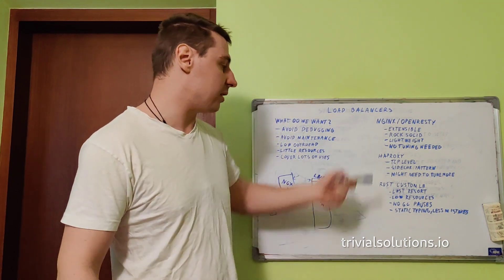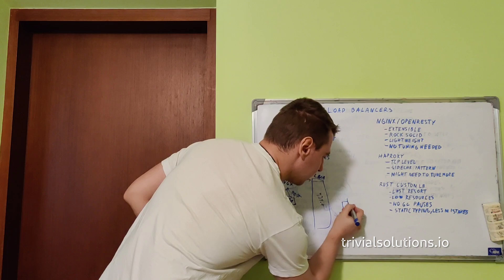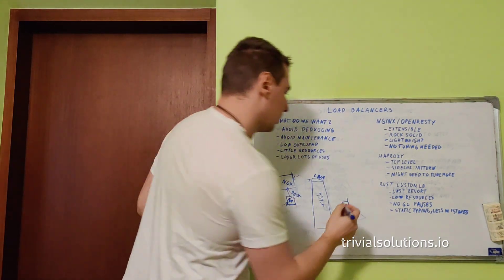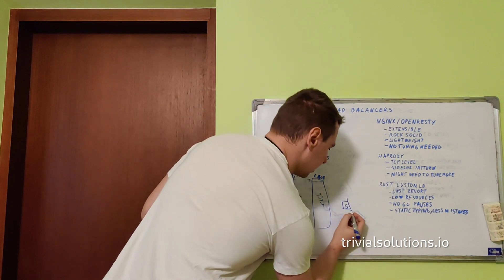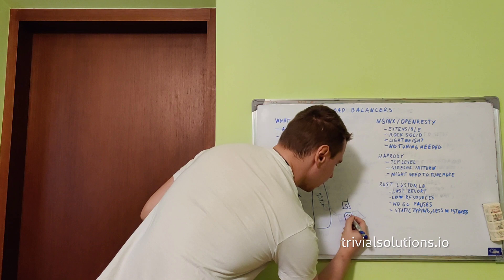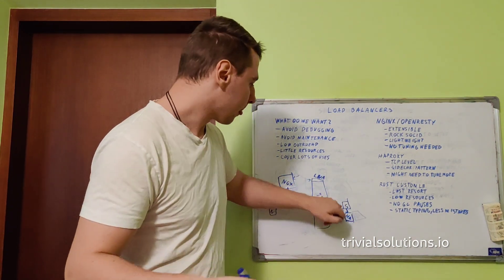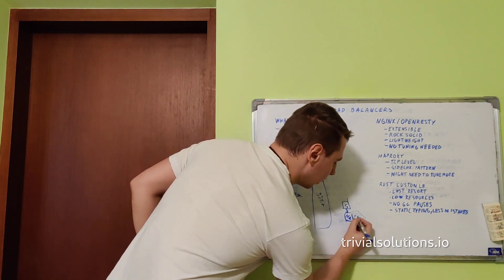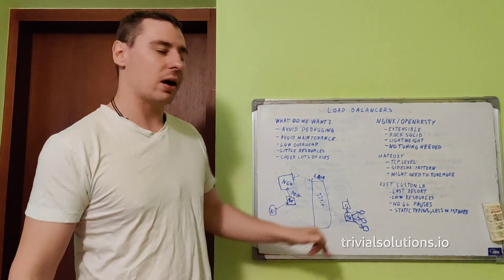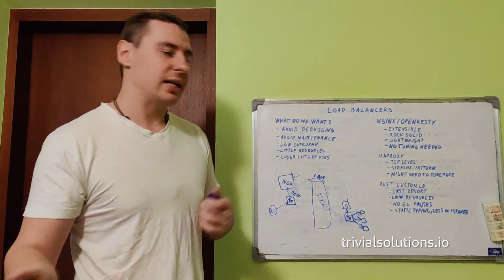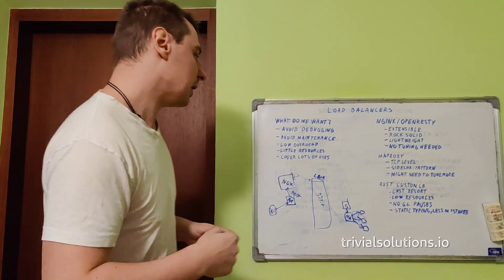I also use a common pattern where a service needs access to, say, a Redis cluster. Instead of building retry logic into the service itself, I put a local HAProxy instance next to it. The service makes a local connection, and HAProxy manages connections out to the full cluster. Then you don't need to worry about whether the service retries, regains the latest connection, or anything like that — HAProxy handles it automatically.